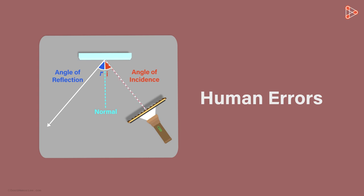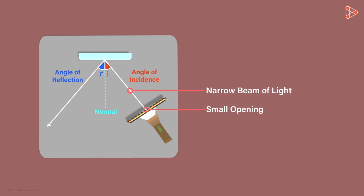It also depends on narrowness of the light beam. Narrower this beam, more accurate will be the results. And this is the reason why we are passing a light through the small opening of the comb. Only a narrow beam of light from the torch passes through the small slit. This minimizes the error in the measurement.